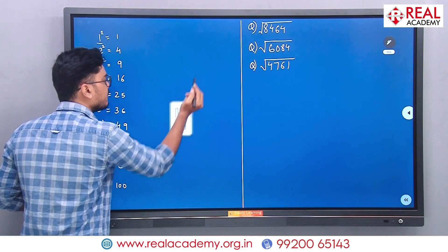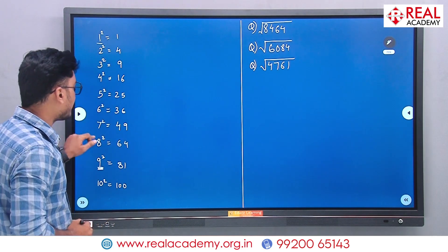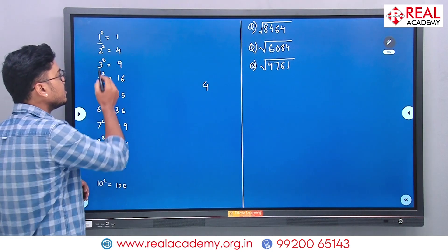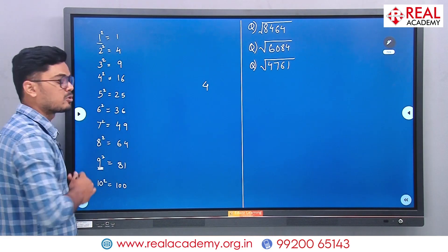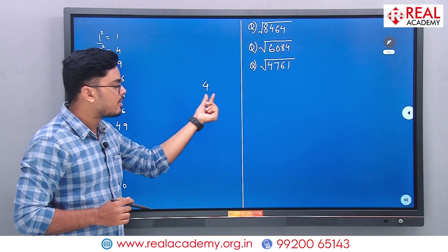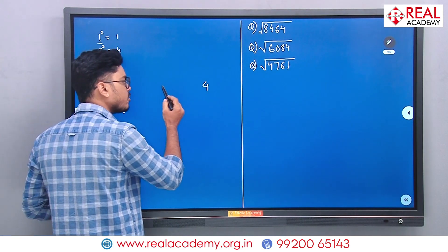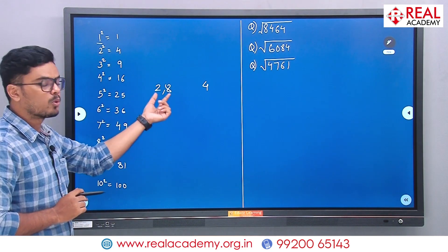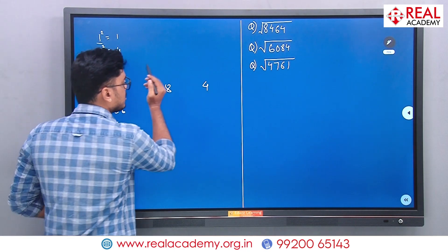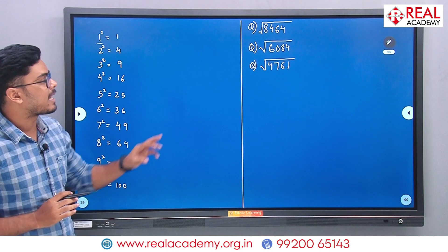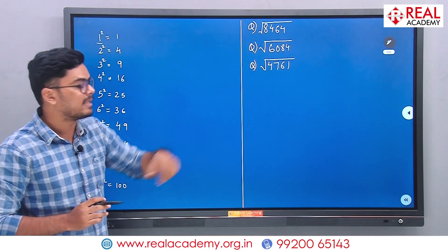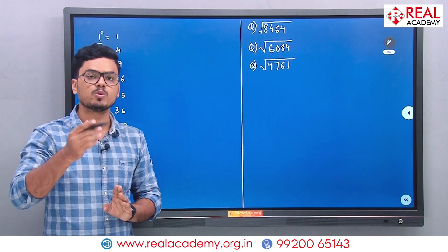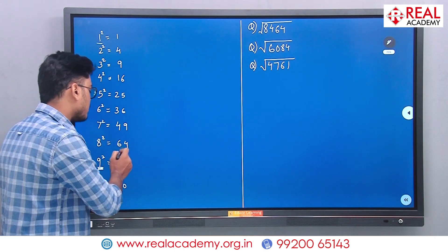Same is the condition for 2 and 8. If the number is ending with 4 — as you can see, 2 squared is 4 and 8 squared is also 4 — so if any number ends in 4, its square root will always have either 2 or 8 in the units place. Both of these questions shown here have 4 in units place, meaning the square root's units place will either have 2 or 8.